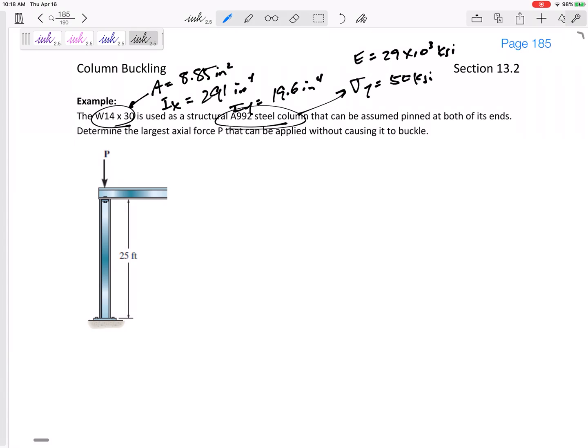But it doesn't tell us the buckling stress. We got to figure out if this is buckling. We want to find the largest axial force P that can be applied without causing it to buckle. Assumed it to be pinned at both sides, so the K value is 1 for that equation. What's our equation? The critical force is pi squared EI over KL squared.